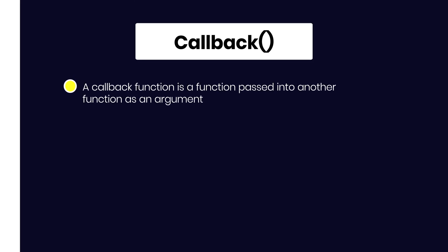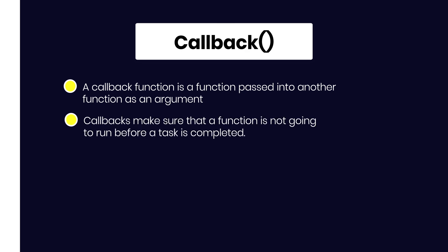So let's first talk about what a callback function is. A callback function is a function passed to another function as an argument, which is then invoked inside the outer function to complete some kind of routine or action. JavaScript runs code sequentially in top-down order, however there are some cases where code runs after something else has happened and is not sequential — this is called asynchronous programming. Callbacks make sure that a function is not going to run before a task is completed, but will run right after the task has completed.